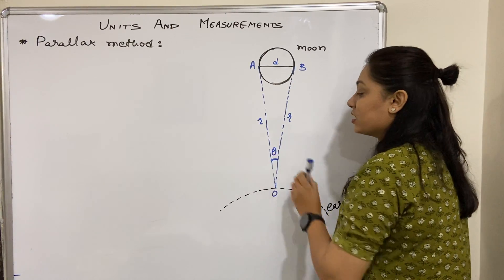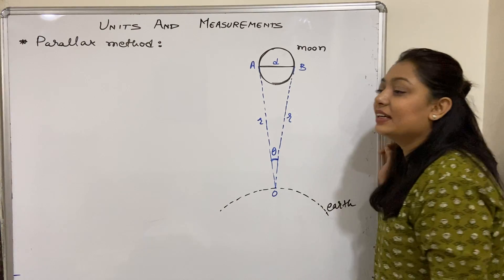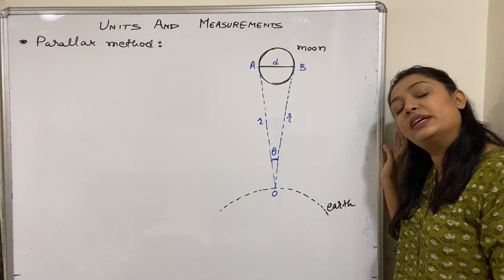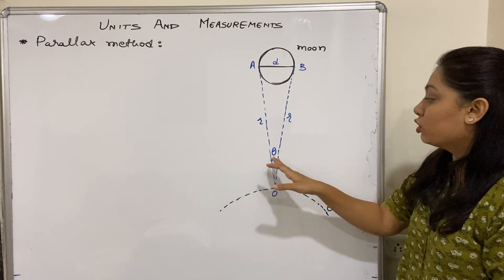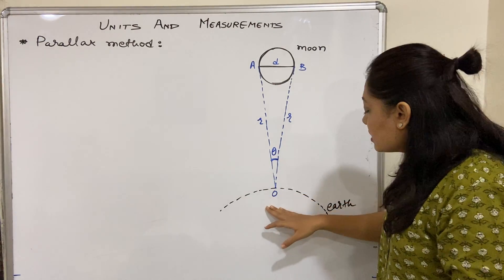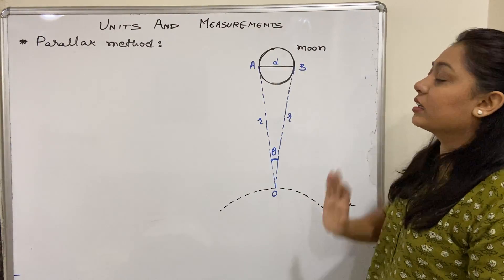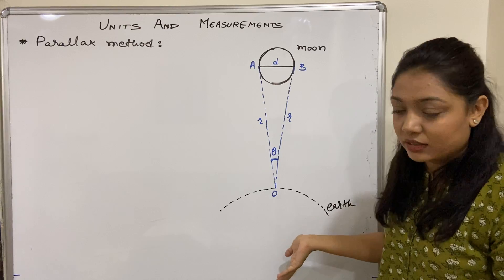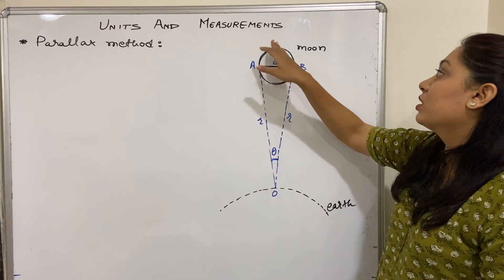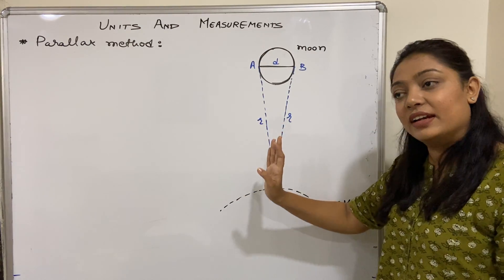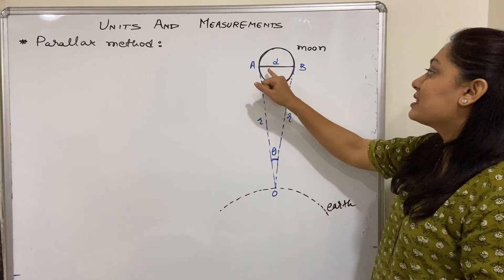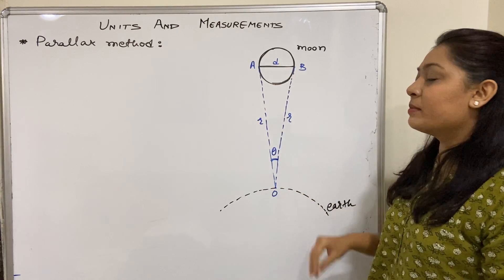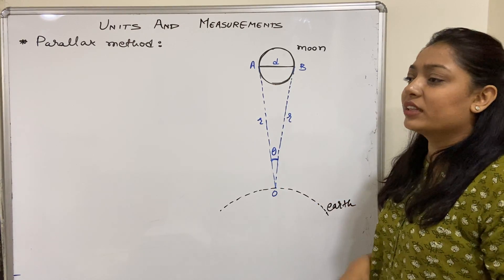So here we get the angle theta, and we know this angle theta. In the question, theta will be given to us. We also know the distance from Earth to the moon - how to find the distance we already know. So r is also given to us, and d is supposed to be found out. So theta and r are given, d will be found.